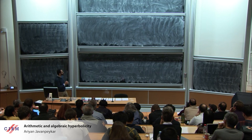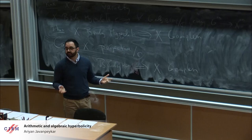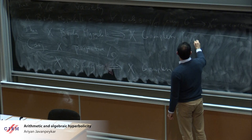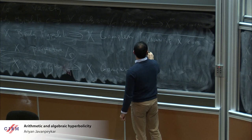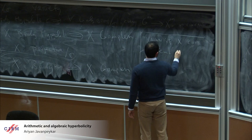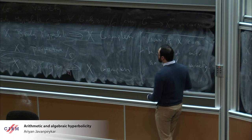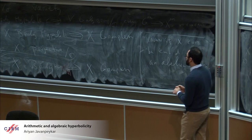This conjecture is known in dimension one. It's also known if X can be embedded into an abelian variety — this is the theorem of Bloch, Ochiai, and Kawamata. And it is also known, as we've seen, for general hypersurfaces of high enough degree in projective space.